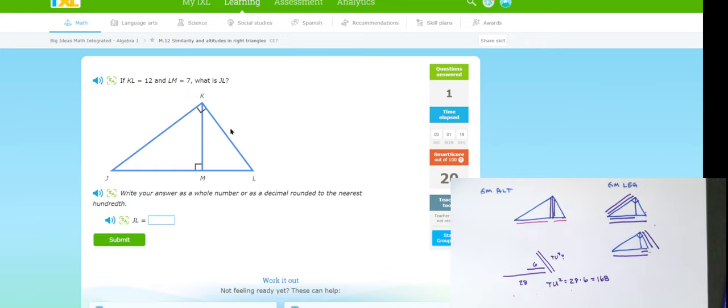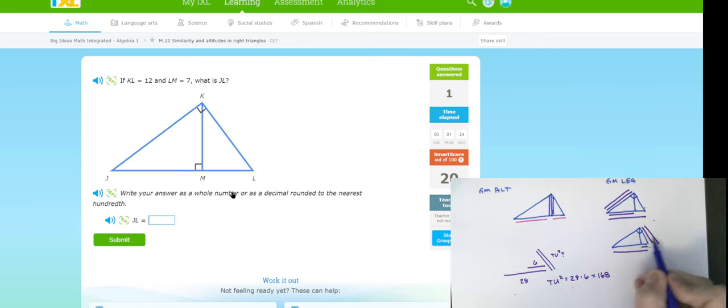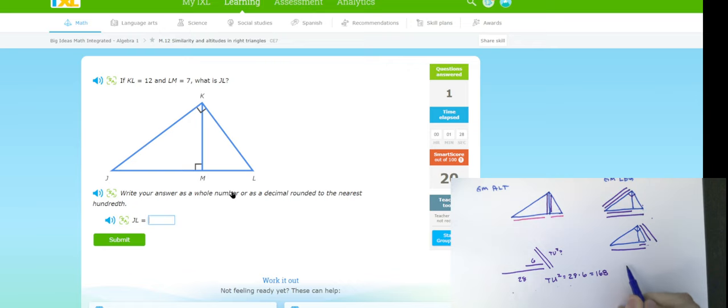KL is this leg. LM is this leg. They want to know the whole length. That's, again, this right-hand problem. So, I know that KL times KL is equal to LM times JL. 144 divided by 7 is 20.57.